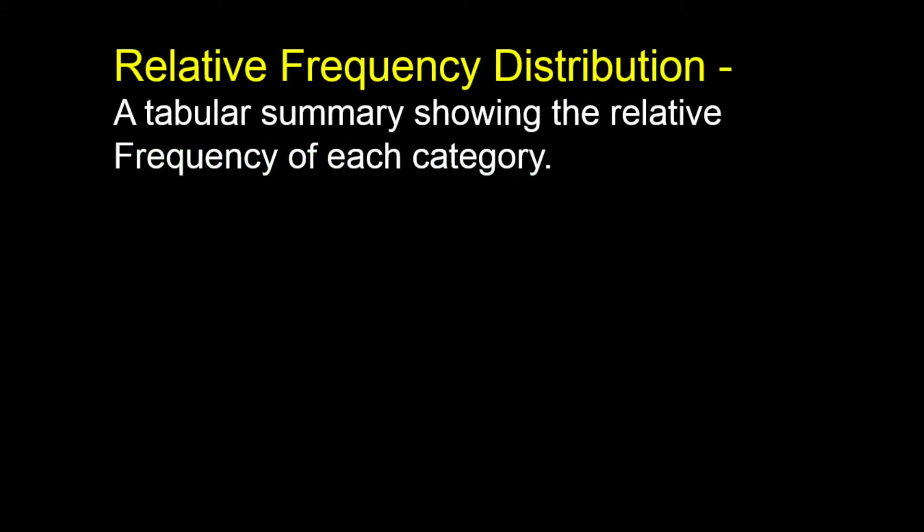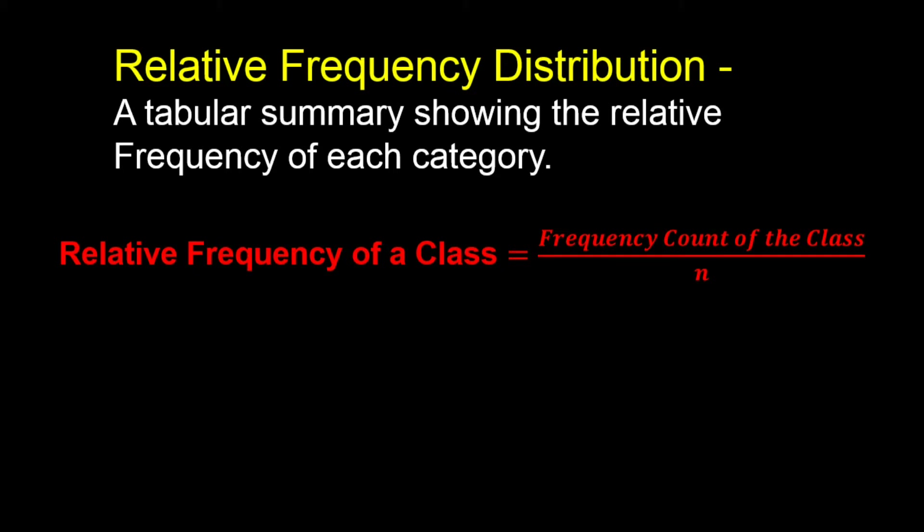Now remember, the frequency distribution gives us the count for each of the categories. But sometimes it is more useful to know the proportion or the percentage of observations in each category. For example, while it's interesting to know that four students received an A, it might be more helpful to know what proportion or percentage of the class that number represents. To calculate the relative frequency of each category, we divide the frequency count of each class by N, the sample size. So the formula is: relative frequency of a class equals frequency of the class divided by N.